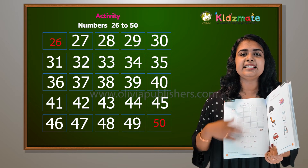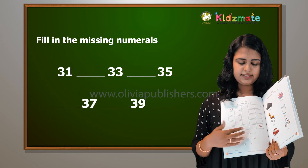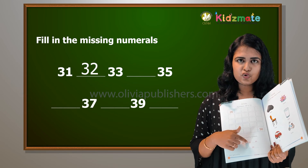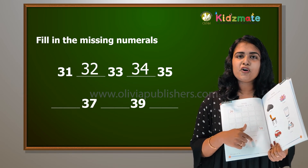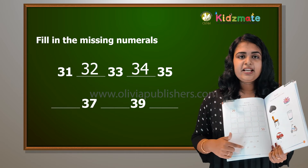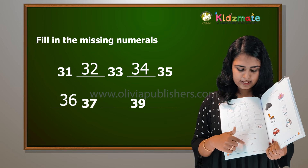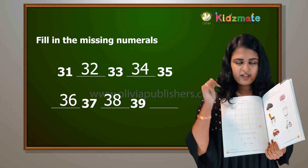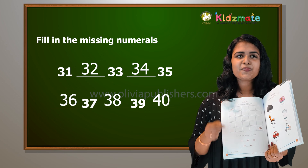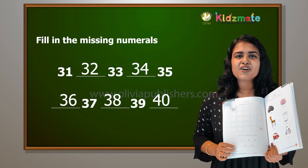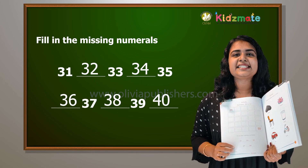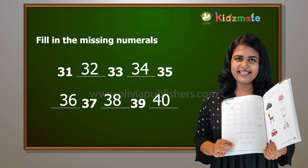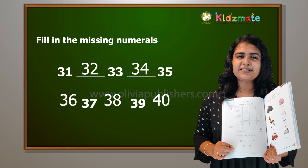Fill in the missing numerals. Thirty-five, thirty-six, thirty-seven, thirty-eight, thirty-nine, forty. Thirty-one, thirty-two, thirty-three, thirty-four, 35, 36, 37, 38, 39, 40. Is it clear? Alright, Maria, kids — thank you so much!